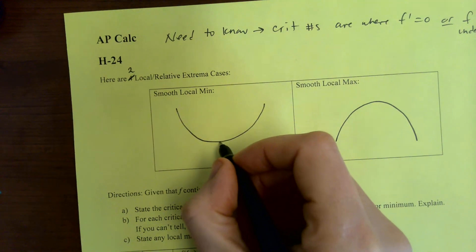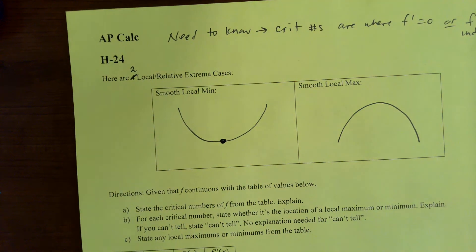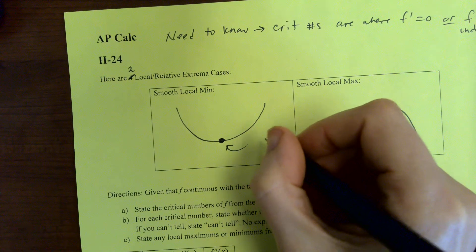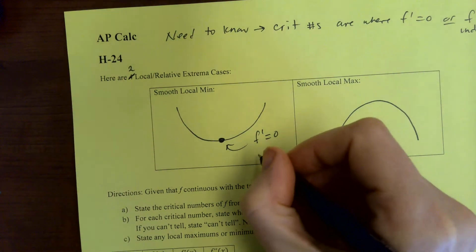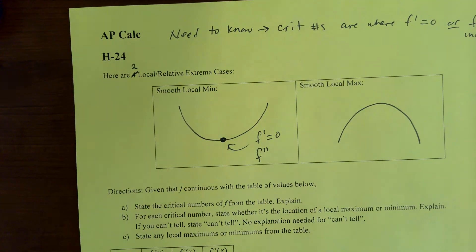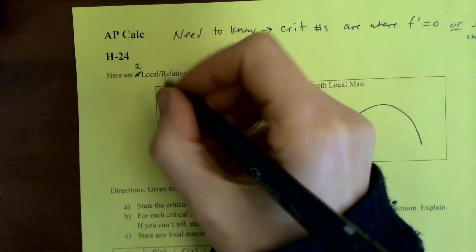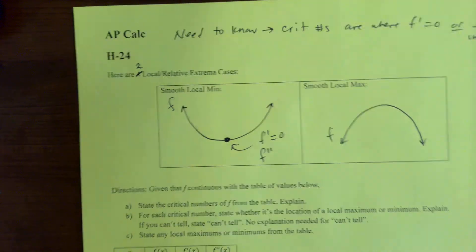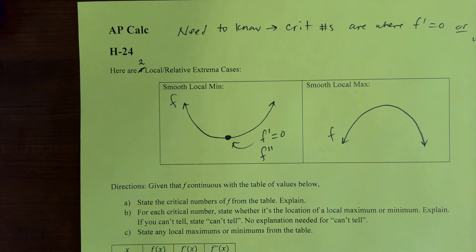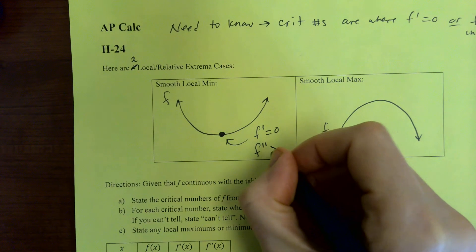Here we've got a smooth local min situation. At this point, F prime is zero. The question is, what about F double prime? When you're thinking about F double prime, you need to consider concavity. Is this graph F concave up or down at that point? It's concave up. So if the original function F is concave up, what does that mean about the second derivative? It is greater than zero.